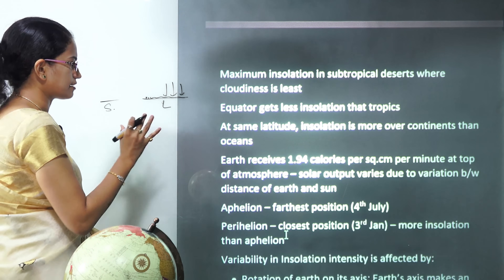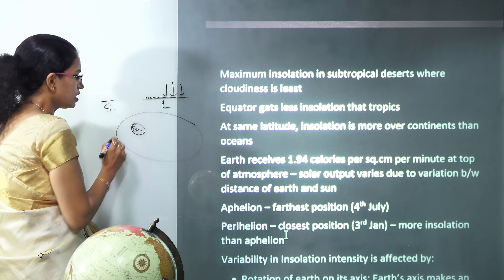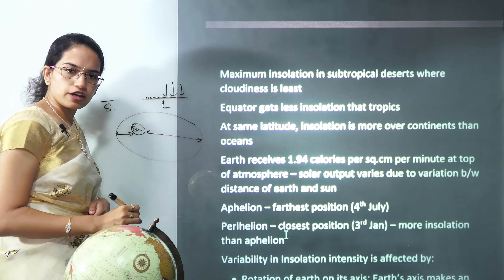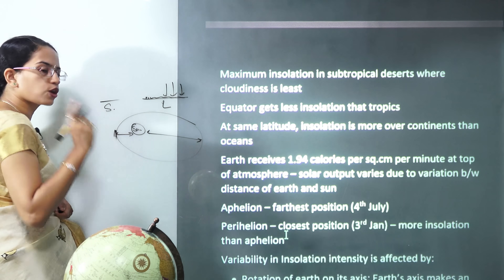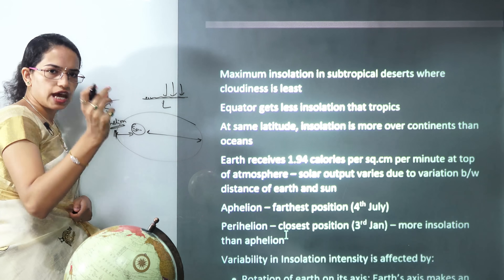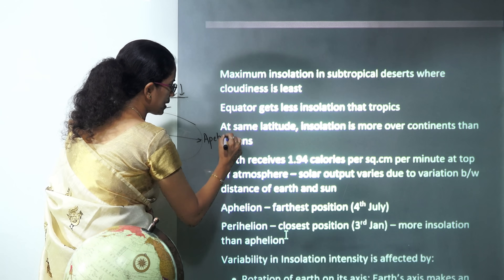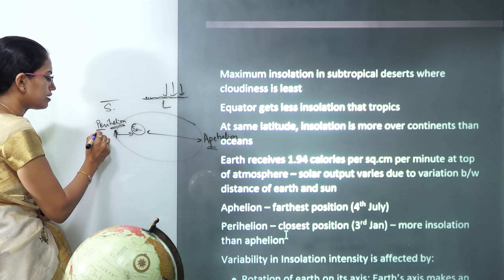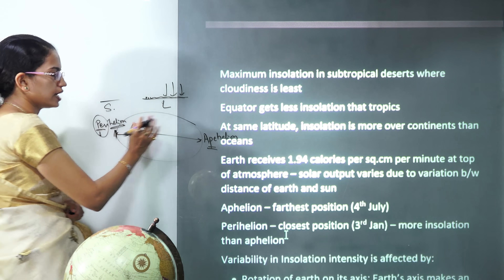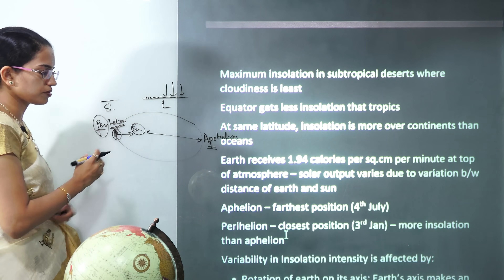The earth revolves around the sun, and at some points it is close and at other points it is far from the sun. The point where the earth is closest to the sun is known as perihelion — 'helion' means sun. The point where it is farthest is known as aphelion. A good way to remember: P for 'past close,' so perihelion is the closest point. When the earth is at perihelion, the amount of insolation received is higher.